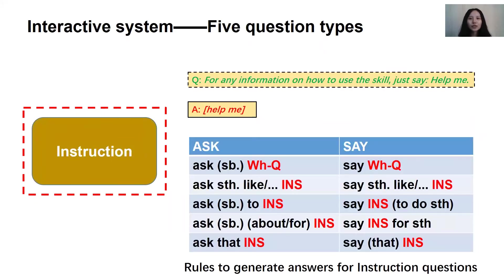Instruction questions are questions that give users derived guidance on how to answer them. We focus on the words 'say' and 'ask'. We answer the content according to five patterns from Oxford Learner's Dictionaries shown in the table. We extract the WH-question content and instructions as answers. In the example, we extract 'help me' as an answer.